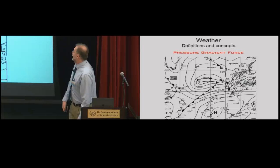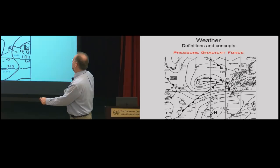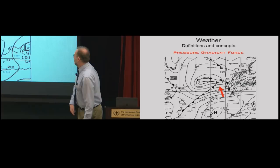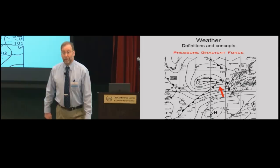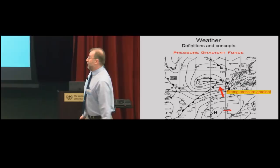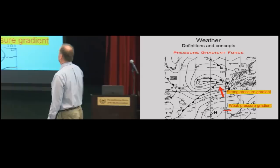Here's a weather chart with isobars labeled in millibars — 1,000, 1,008, and so on. In this area, we have many isobars over a relatively short distance, indicating a strong pressure gradient. Down here the isobars are fairly far apart, so we still have a pressure gradient, but not as strong.